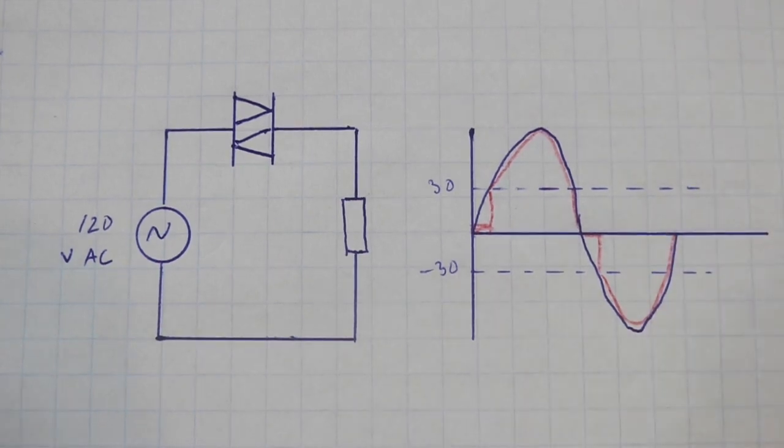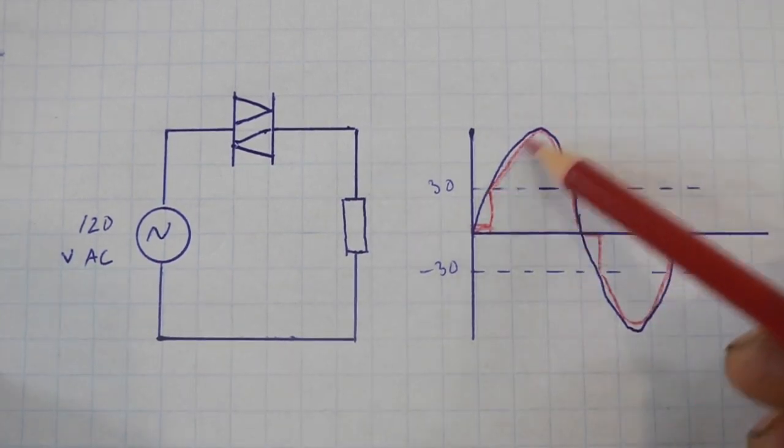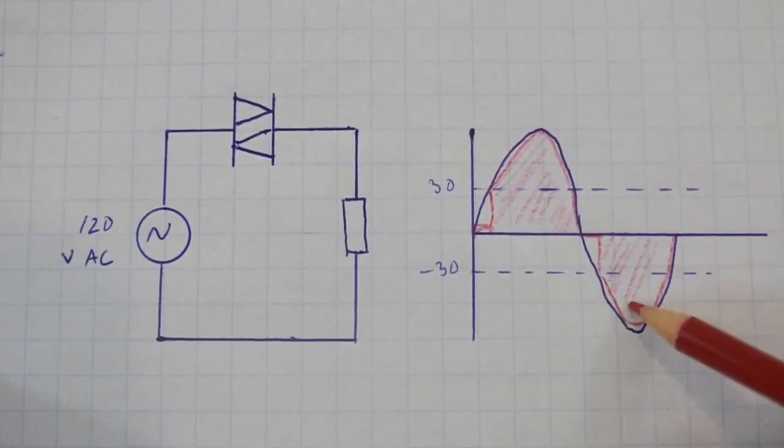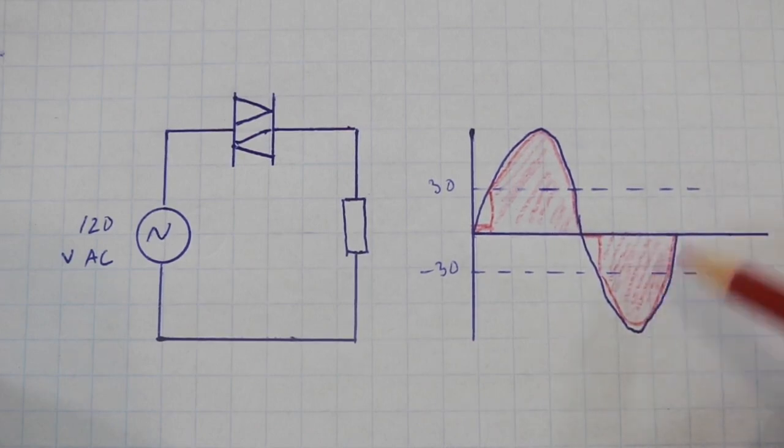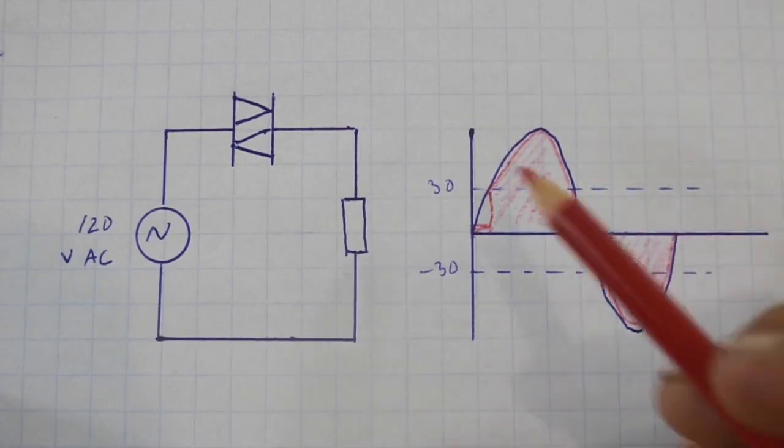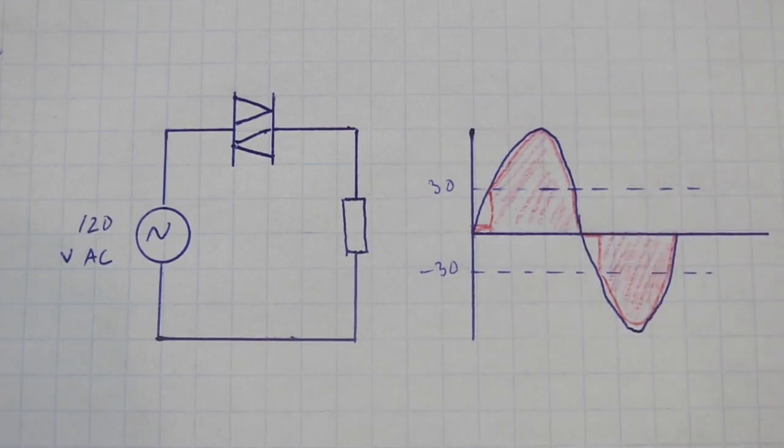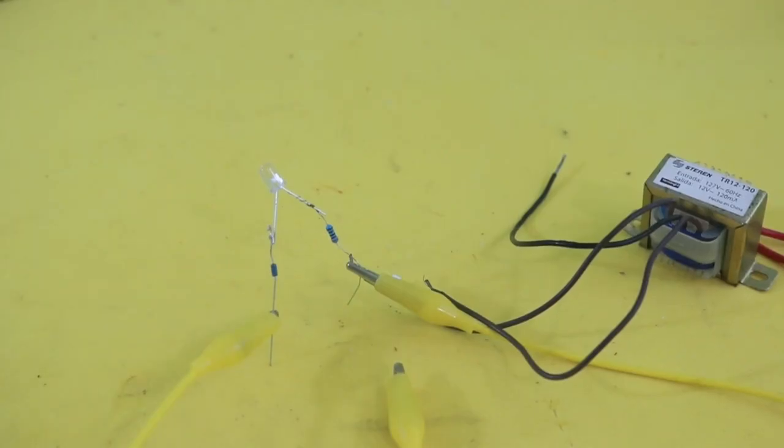Therefore, current will flow in this part of the wave. Here and here there will be no power through the circuit. Okay, let's make a test.